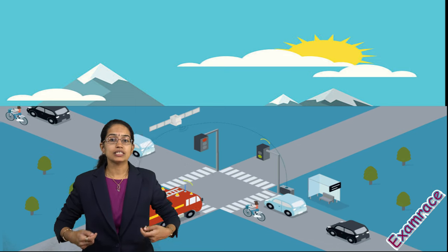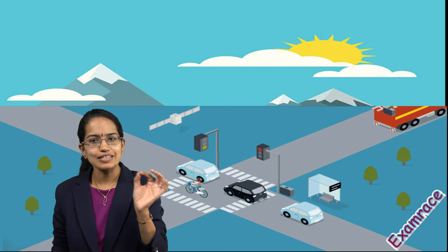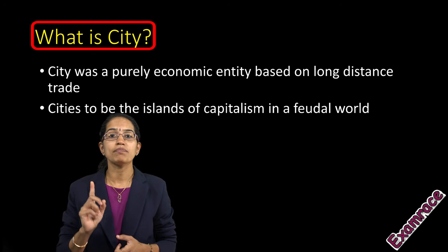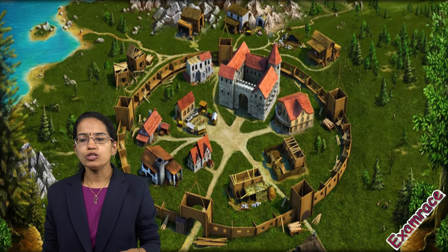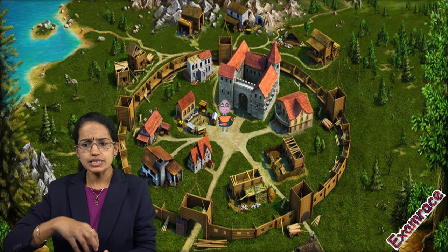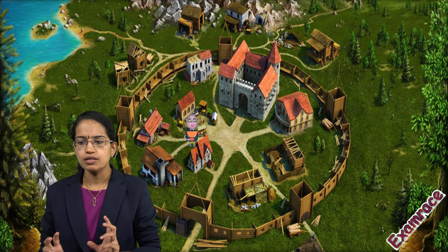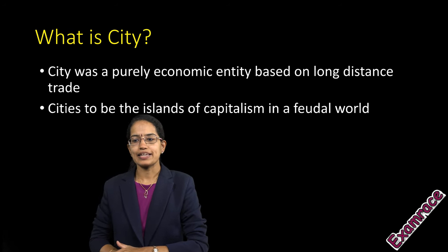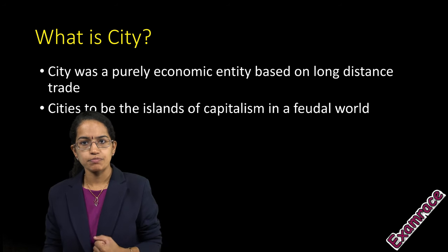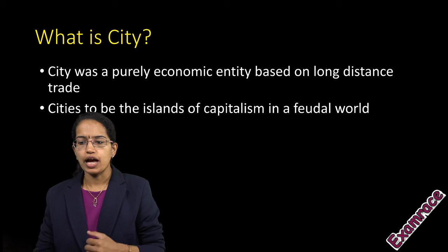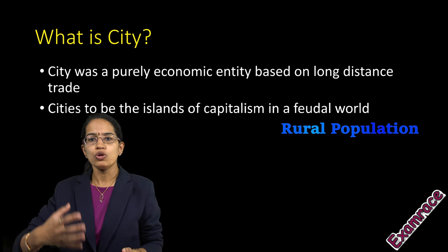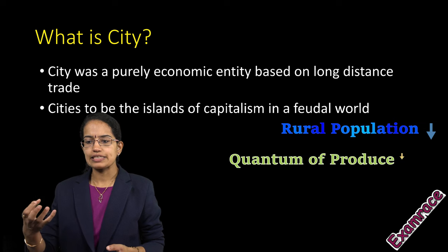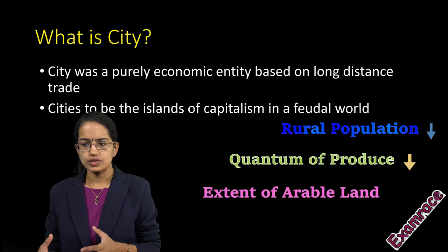According to Pirenne, a city was simply an economic entity based on long-distance trade. Long-distance trade was a paramount condition for a city to survive and thrive. He also said that cities were basically the centers of capitalism in this feudal world, and that a city's prosperity could be determined by self-defeating industrial protectionism. He believed that the feudal crisis would lead to decline in rural production, low yield, low quantum of production, and the extent of arable land was also affected by this feudal system.